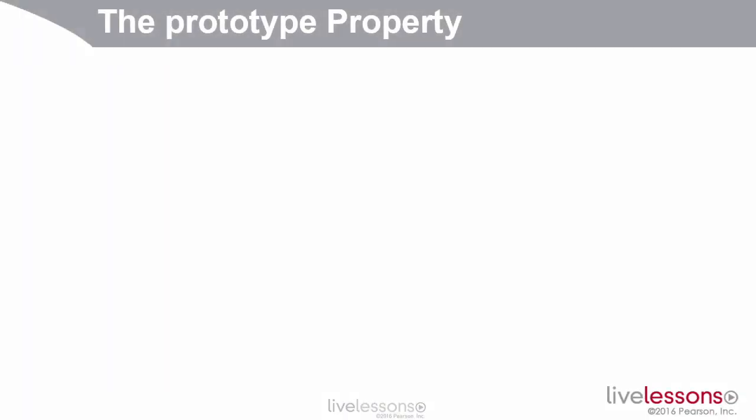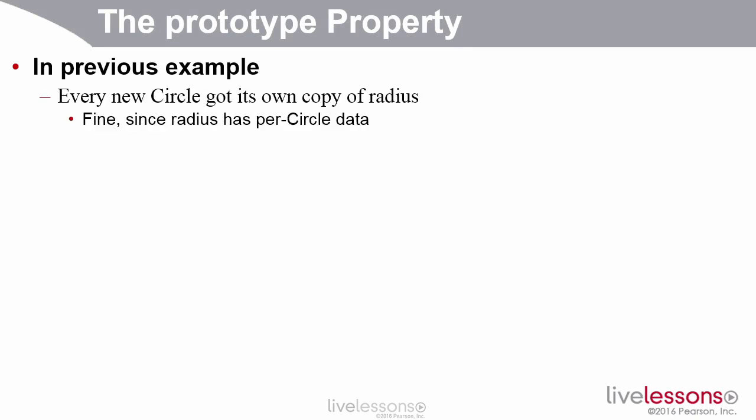Okay, the previous version of the circle class was not bad, but it was a little bit inefficient. Because in that example, every new circle had its own individual copy in memory of the radius. Well that's fine, because each circle could potentially have a different radius.